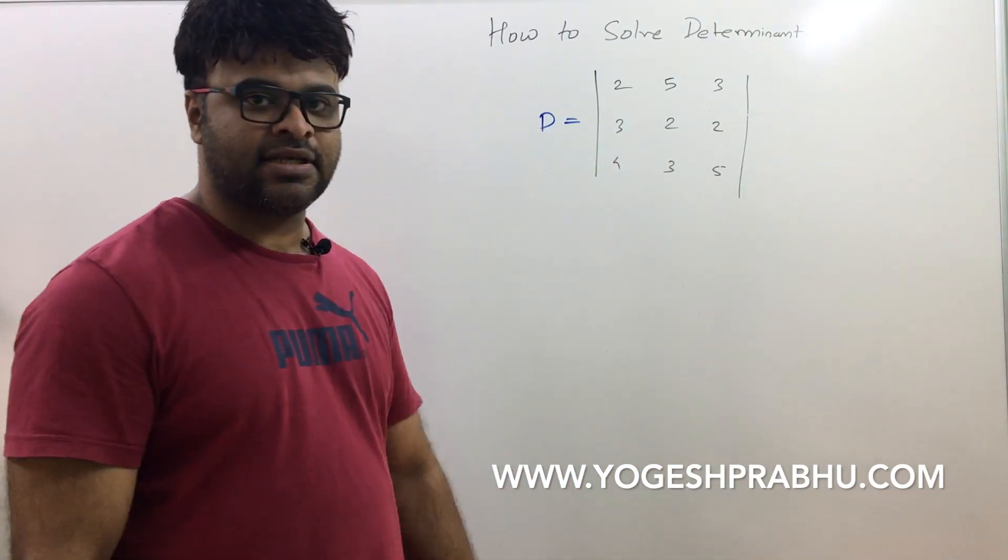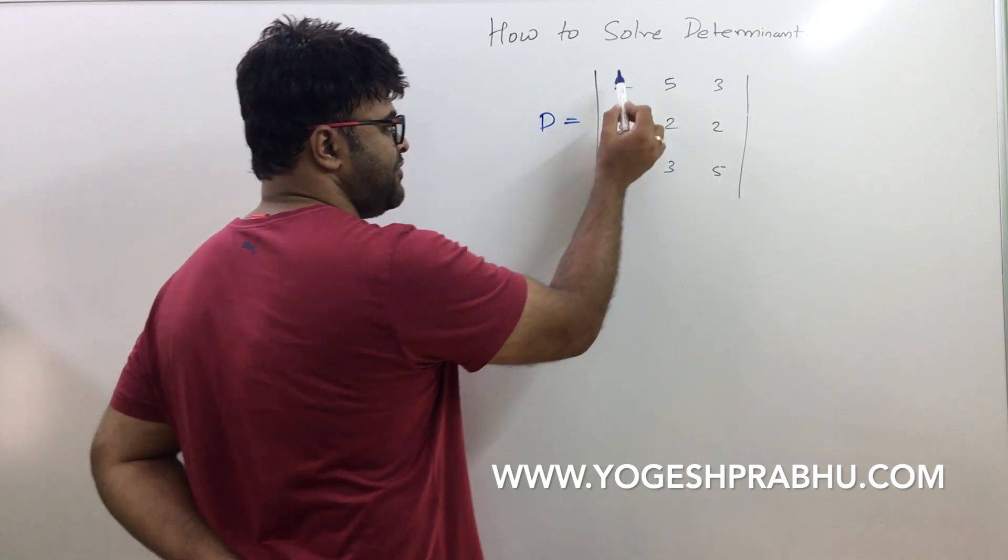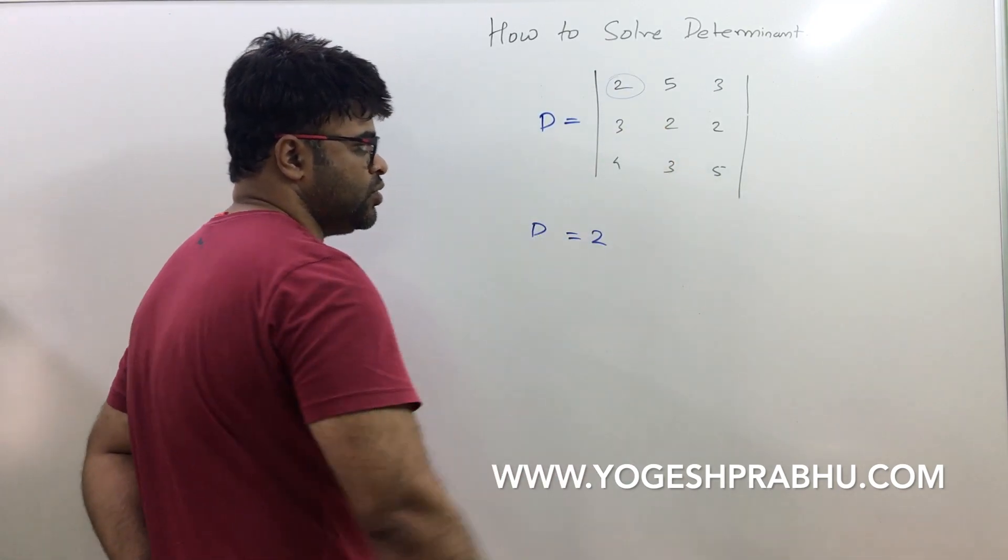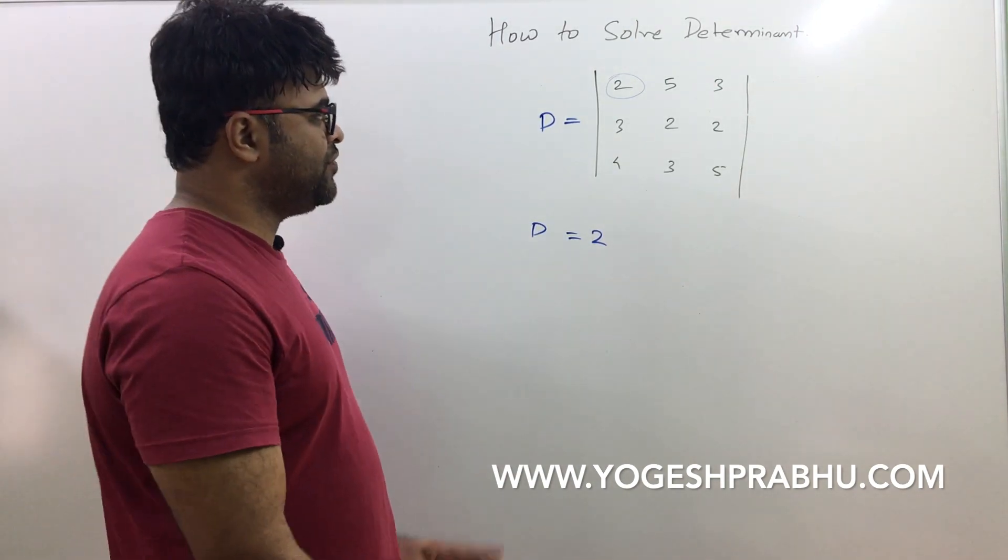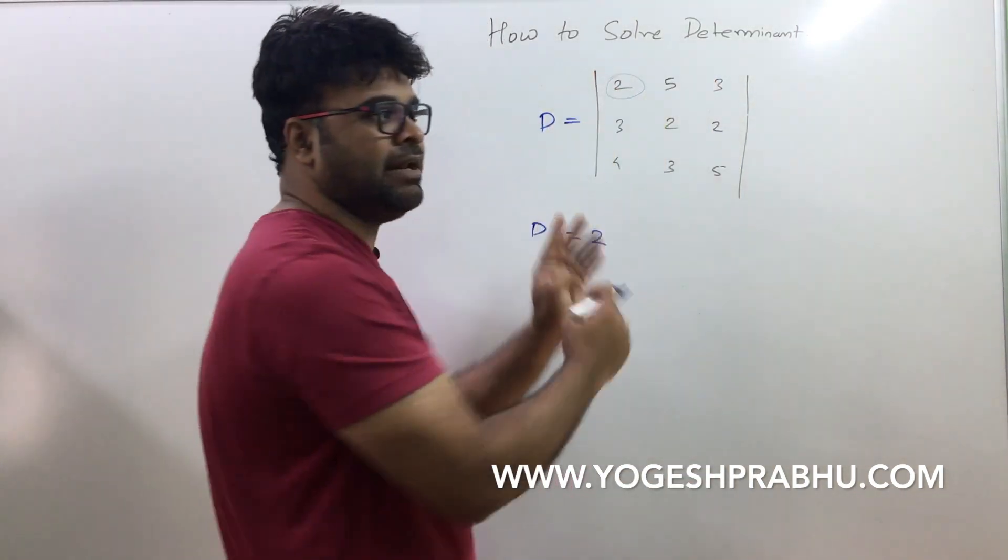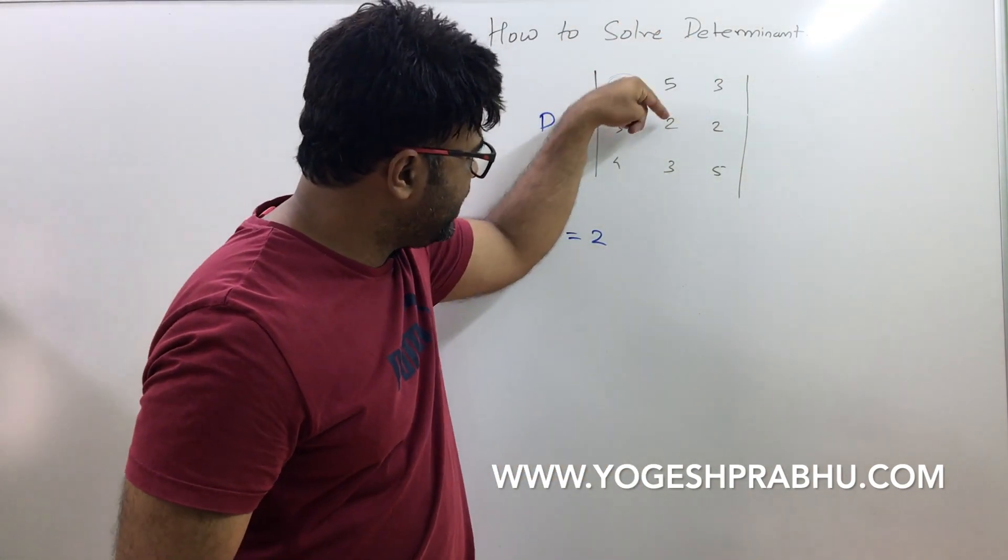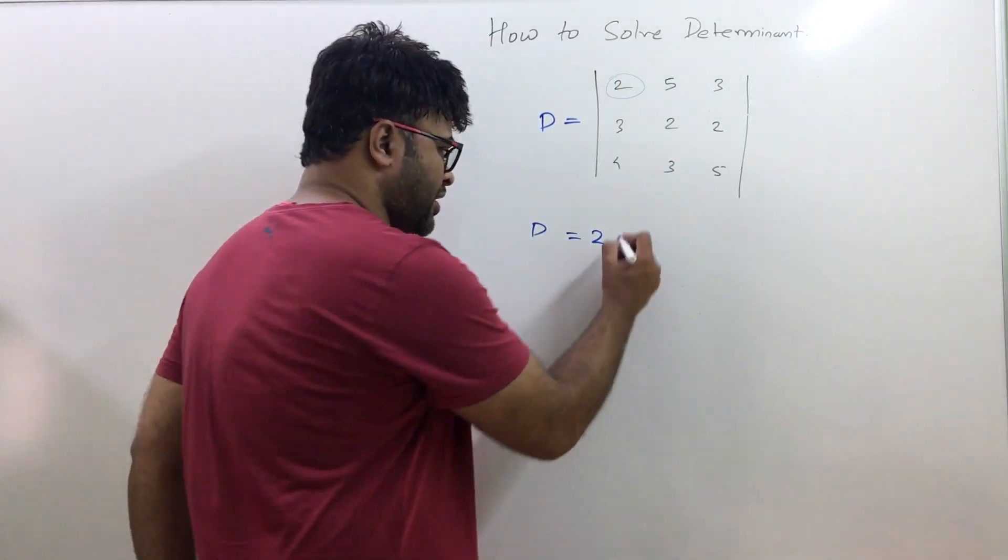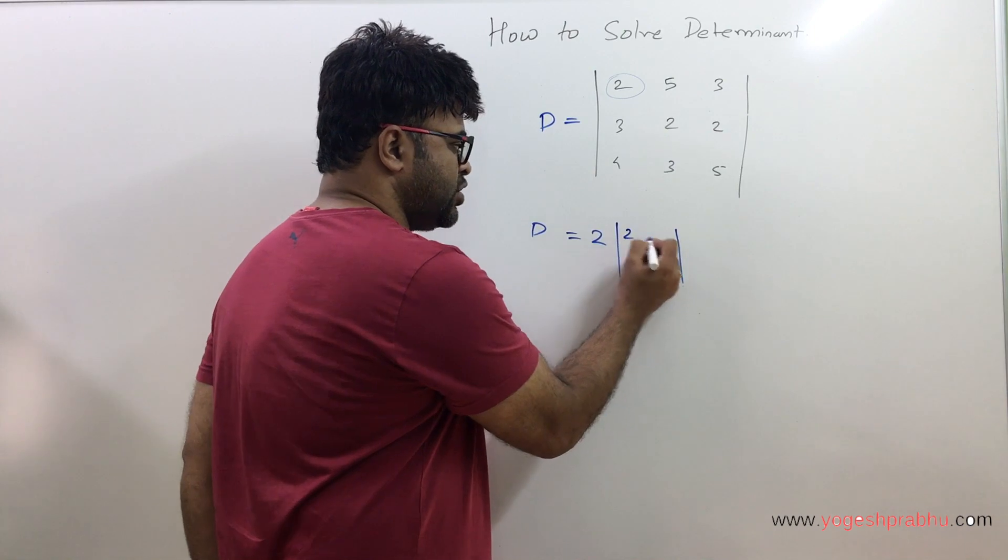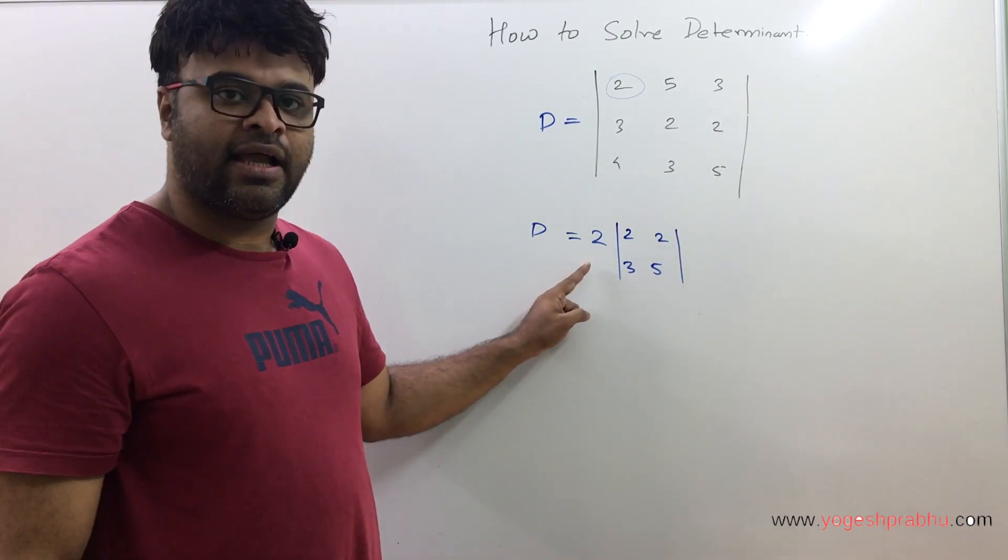How do you solve this? Begin with the first element here, that's 2, so I'll write D equals 2. Next, you will have to hide the column and the row of this element, so you'll hide the first column and first row. When you hide this, you will see only 2, 2, 3, 5, so you draw a smaller determinant called a minor. So it is 2, 2 and 3, 5.